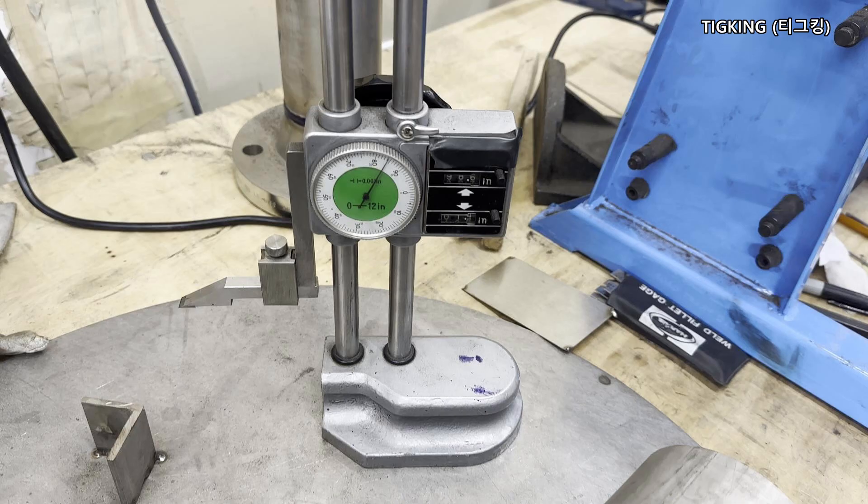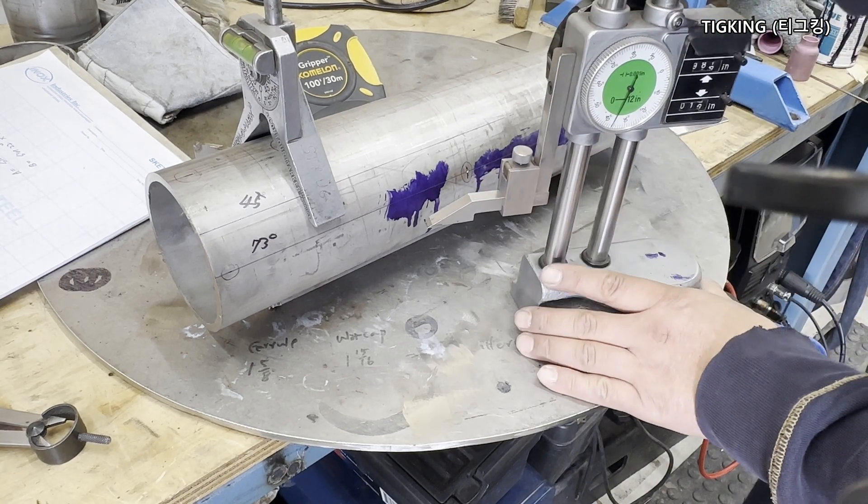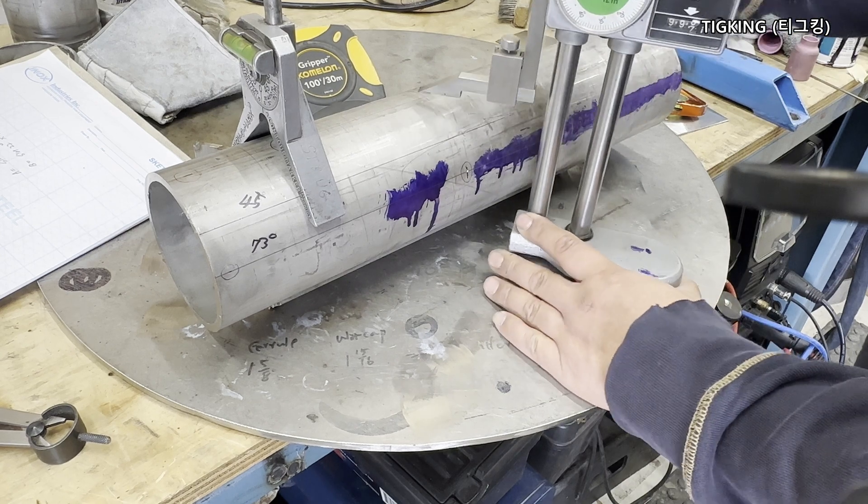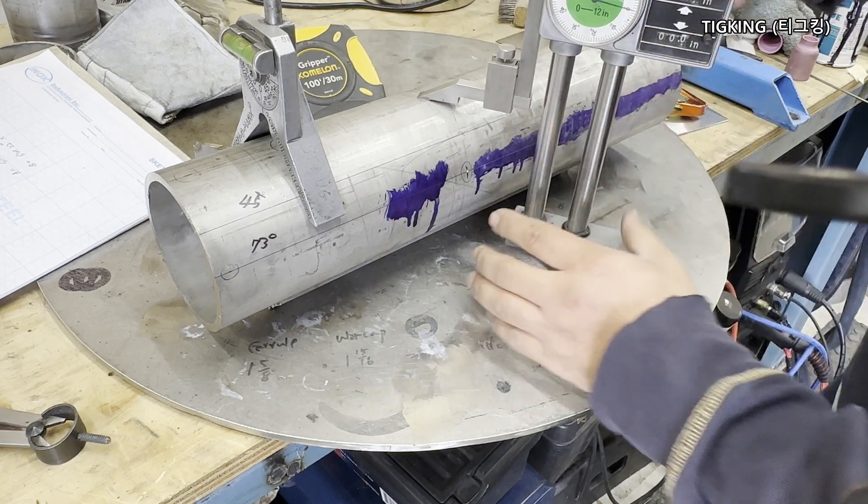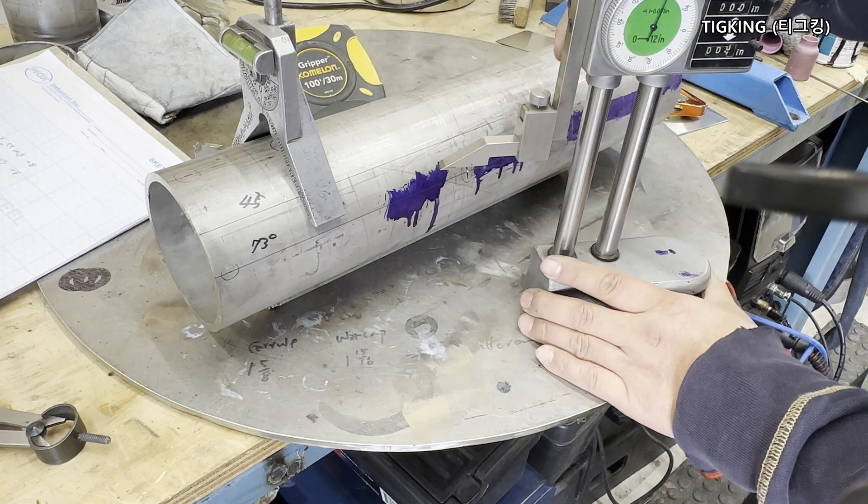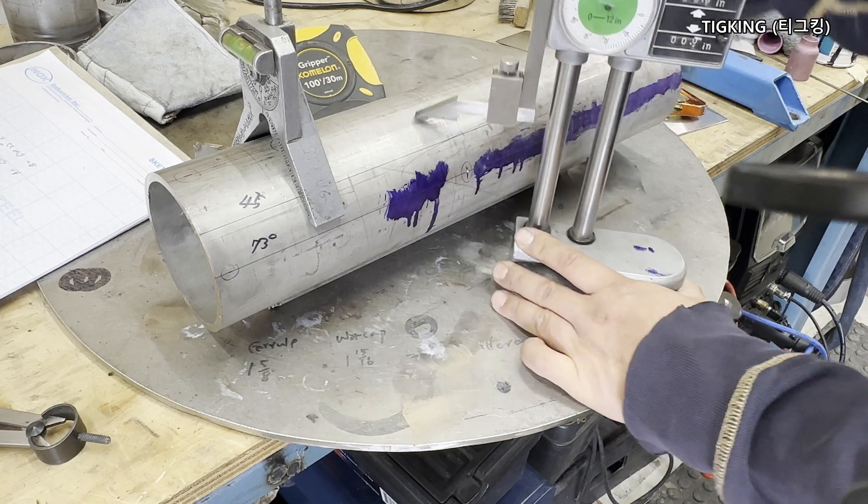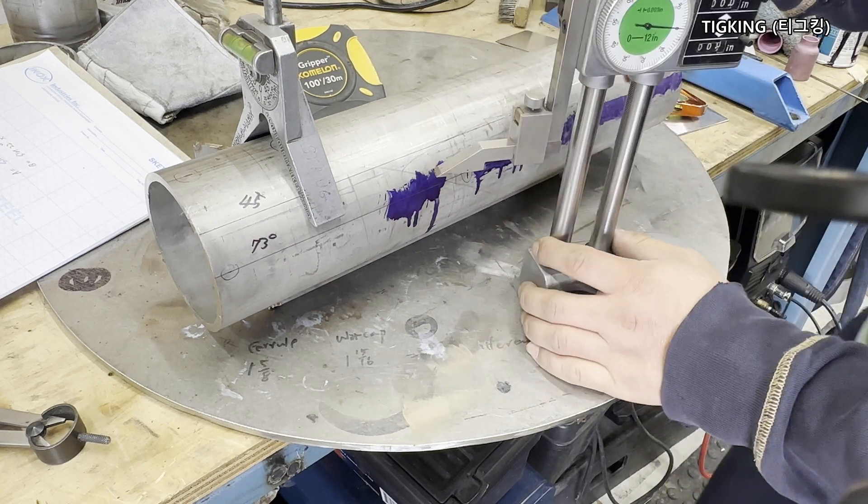The last method is to use a height gauge. Many fabricators and welders may not be familiar with this tool, but it is very accurate and easy to use. I bought this one from a retired machinist at 50 bucks and it is one of my favorite tools. As you may guess from its name, we have to find the height to layout with this tool.